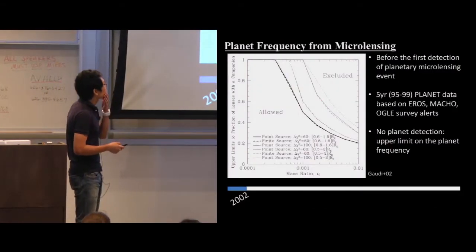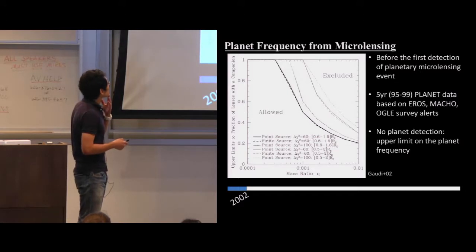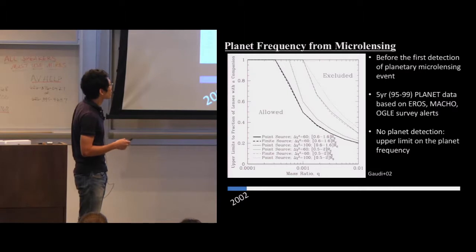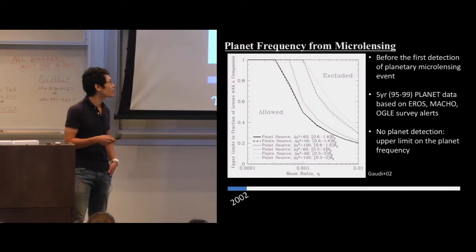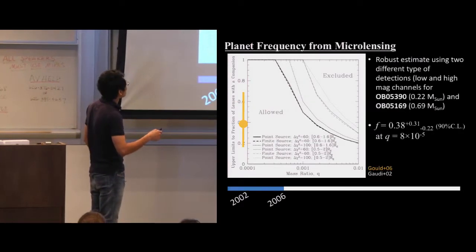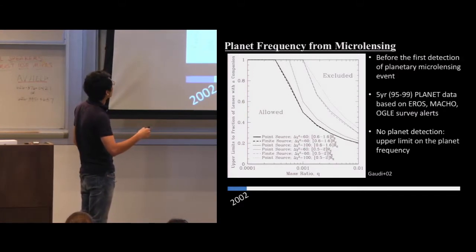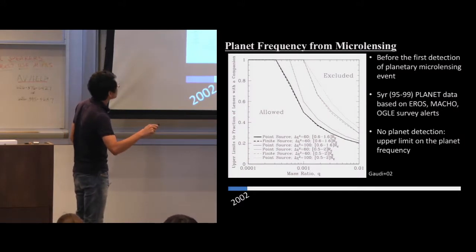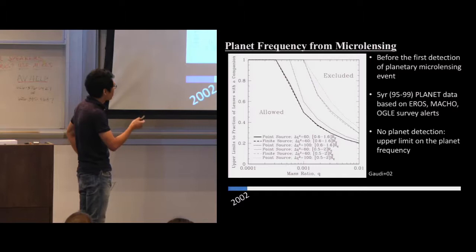Let me briefly review the planet frequency and mass ratio function from microlensing. The first large statistical study predates the first microlensing planet discovery, so there were no detections — only an upper limit on planet frequency, defining an allowed region and an excluded region. This was in 2002.